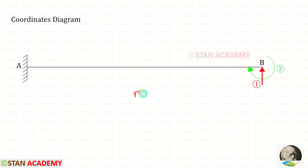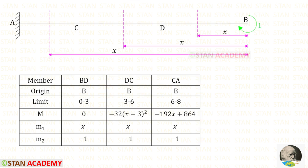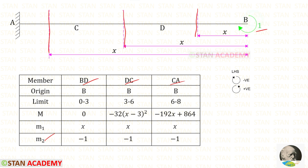Now we are going to find the moment M2. We apply a unit moment at the second coordinate, which is MB. Since this coordinate is kept in the clockwise direction, we apply the unit moment clockwise at point B. Up to all sections we have only this unit moment, acting in the clockwise direction. By the left-hand side rule, clockwise is negative, so M2 = minus 1 for all members.